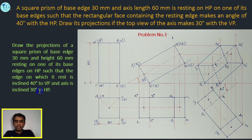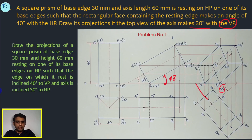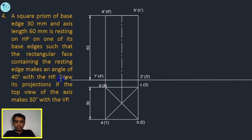The axis is inclined — this angle is 30 degrees. But here, the rectangular face inclination is 40 degrees. This is the same type of problem. The top view of the axis makes an angle of 30 degrees with VP, with the reference line. The inclination is 30 degrees. The same type of problem was done in the first stage.